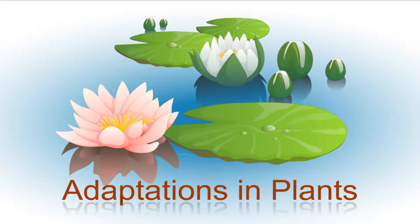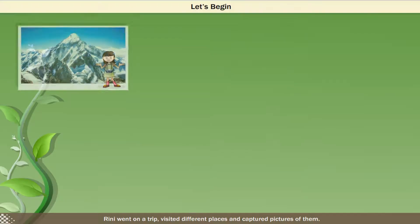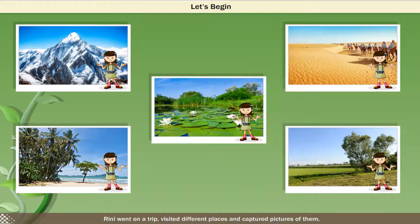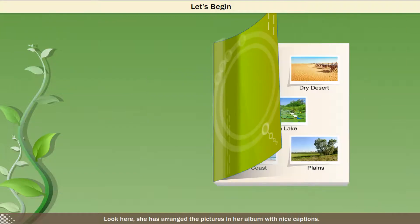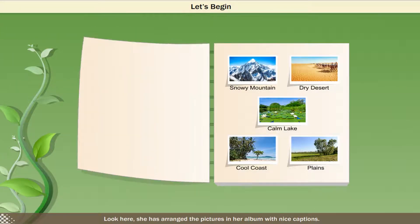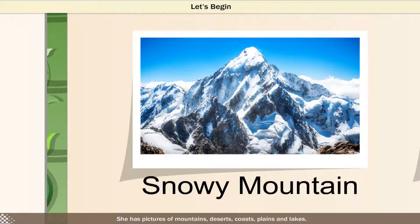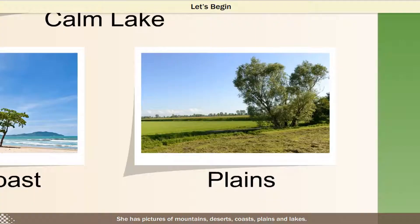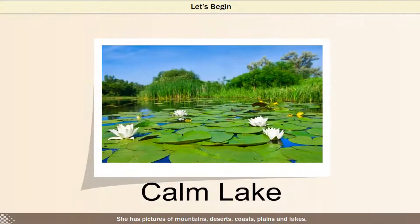Adaptations in Plants. Rennie went on a trip and visited different places, capturing pictures of them. She arranged the pictures in her album with nice captions. She has pictures of mountains, deserts, coasts, plains and lakes.